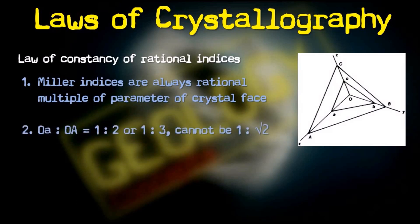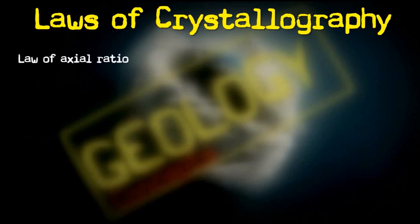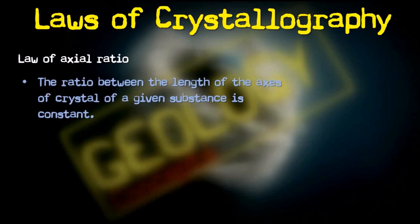The law states that for the larger plane capital ABC, the ratio of OA to O-capital-A can be 1:2, 1:3, and up to infinity, but it can never be 1:√2. The ratio will always be a rational multiple. It cannot be irrational — it can go up to infinity in multiples, but it can never be √2 or √3. This is the Law of Rational Indices.